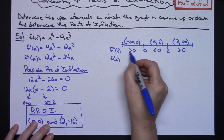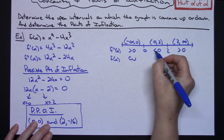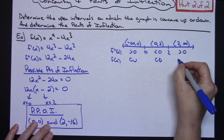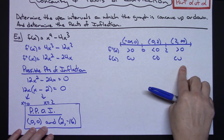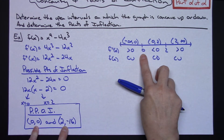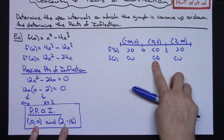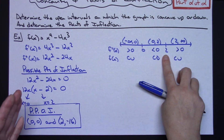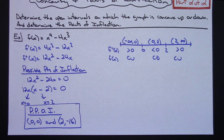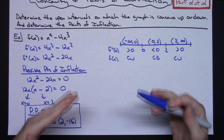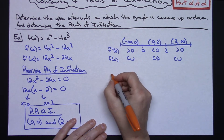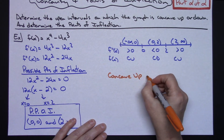When the second derivative is positive, the original function is concave up. When it's less than zero, the function is concave down. So we have: concave up, then concave down, then concave up. Looking at x equals zero and x equals two, the concavity changed at both points — from concave up to concave down at zero, and from concave down to concave up at two. Since this is a polynomial, it's smooth and continuous everywhere, so both points are confirmed as points of inflection.